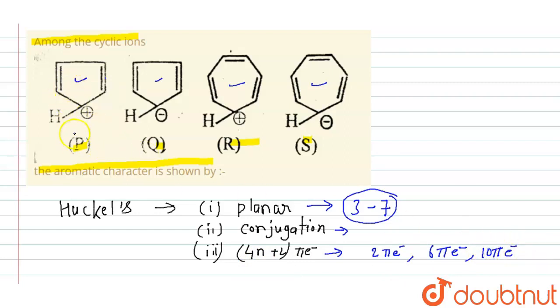Now let's check. Compound P has 2 plus 2, that is 4 pi electrons. So it must have either 2, 6, 10 and so on. So P cannot be aromatic. Now coming to Q: 2 plus 2 and this is negative 1, total 6. So Q will show aromatic character.